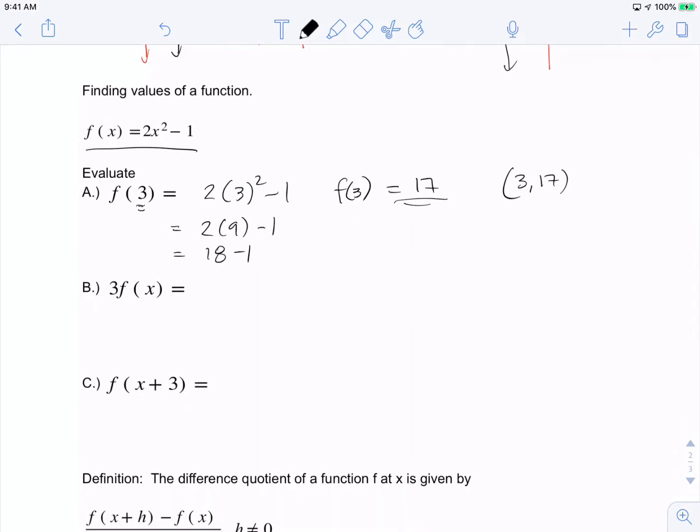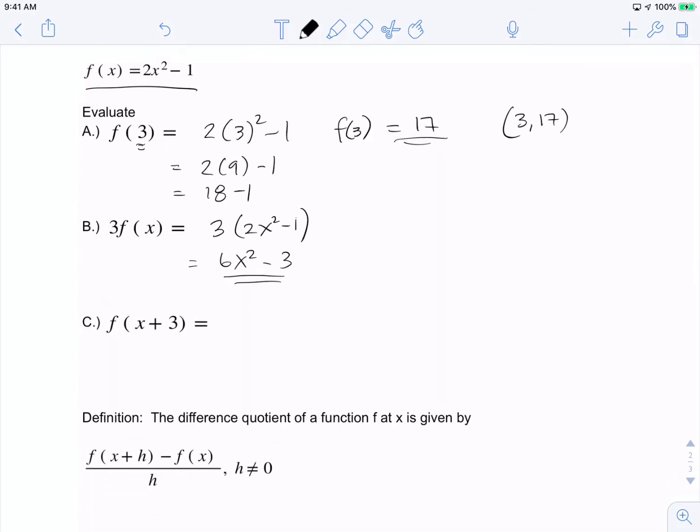The next example: this 3 in front tells us we're going to go 3 times the function itself. So that would make it 6x² - 3, and that is our result.